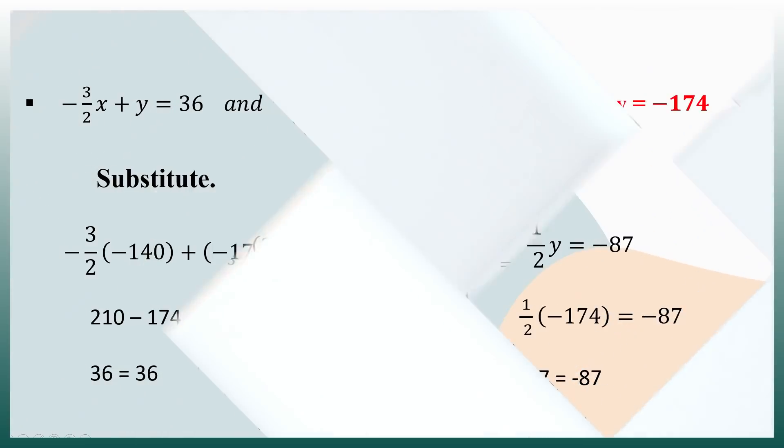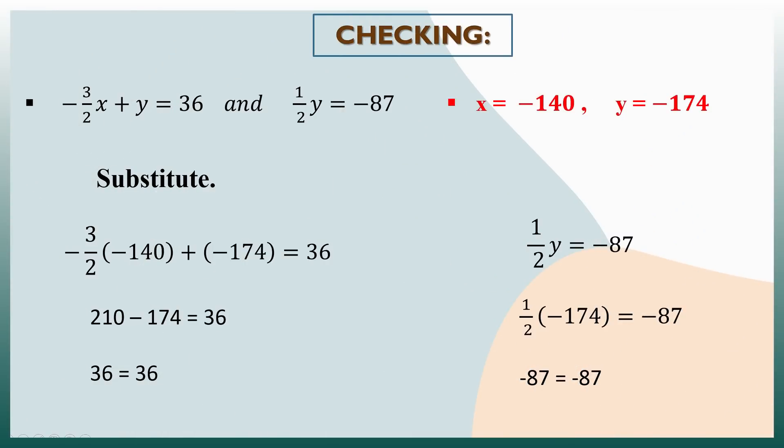We may have gotten our answers, but how can we be sure they are correct? There is a way to test the accuracy of your values. For example, if we have two equations and our computed x and y values are negative 140 and negative 174, we simply have to substitute the solved values into the original equations. If the constant on the right side is equivalent to the value on the left side, then you can be assured your answer is correct.